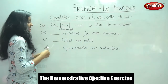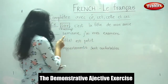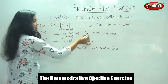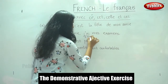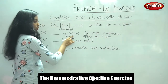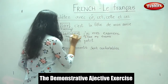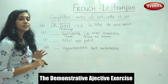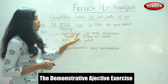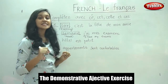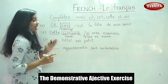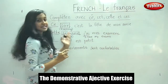The next sentence is: dash semaine, j'ai mes examens. 'Semaine' means week. So: dash week, I have my exams. We have recognized the noun — it is 'semaine'. It is in the singular form and it is feminine. So which word do we use for feminine singular? Yes, we use 'cette'. Cette semaine — this week I have my exams.